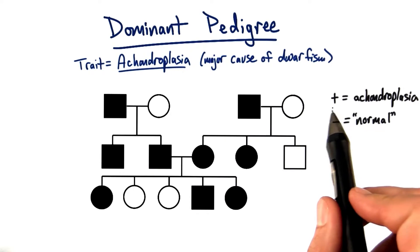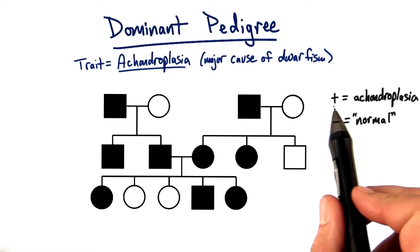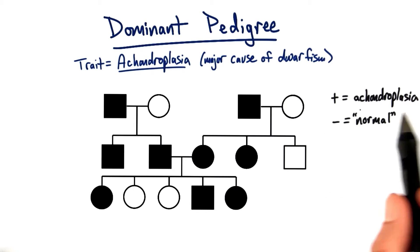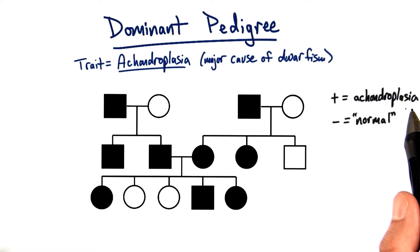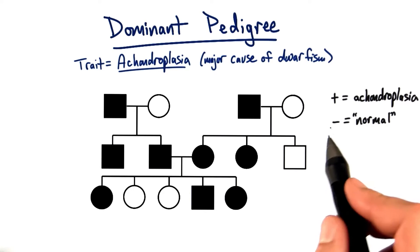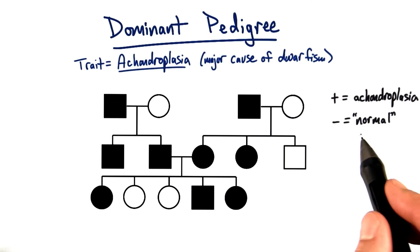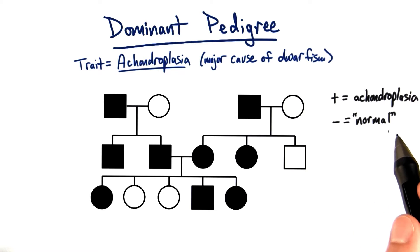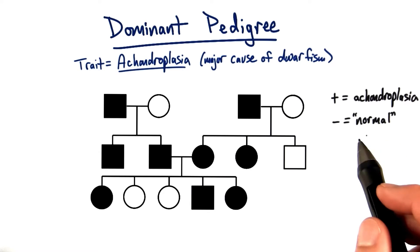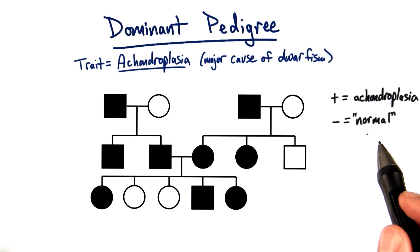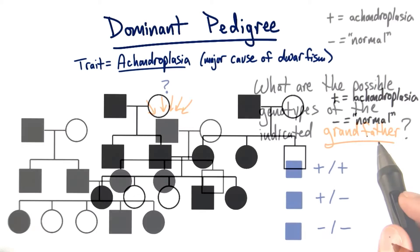In this case, the plus, or dominant allele, is actually for achondroplasia, which causes dwarfism. And the minus allele is what we'll call normal — meaning just normal height.